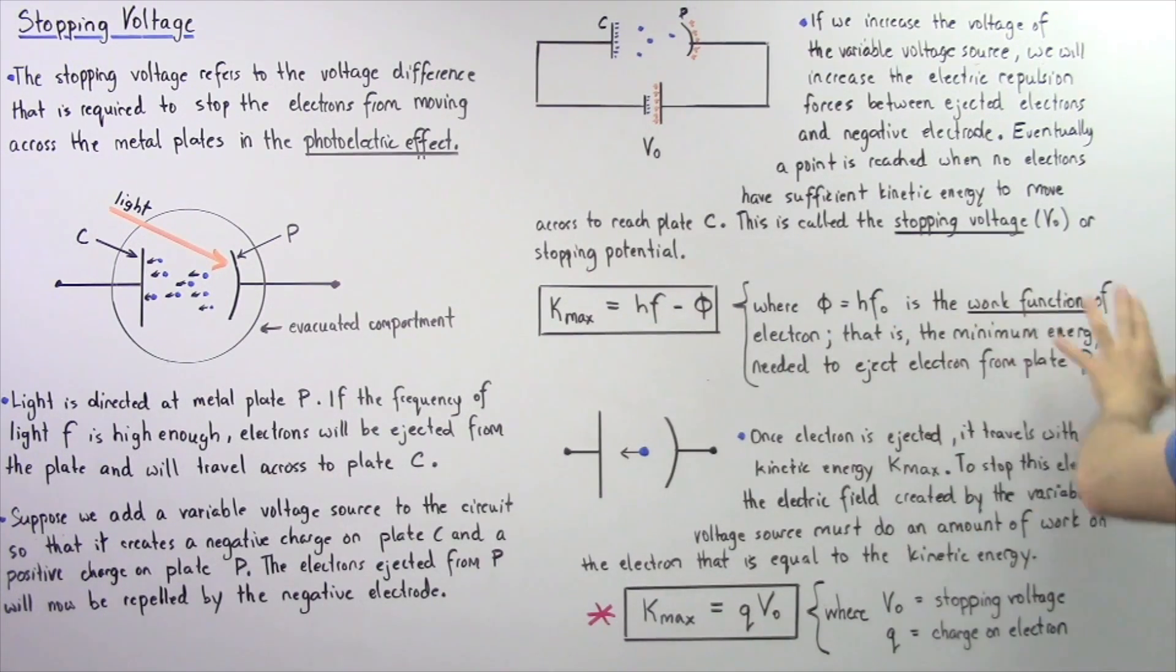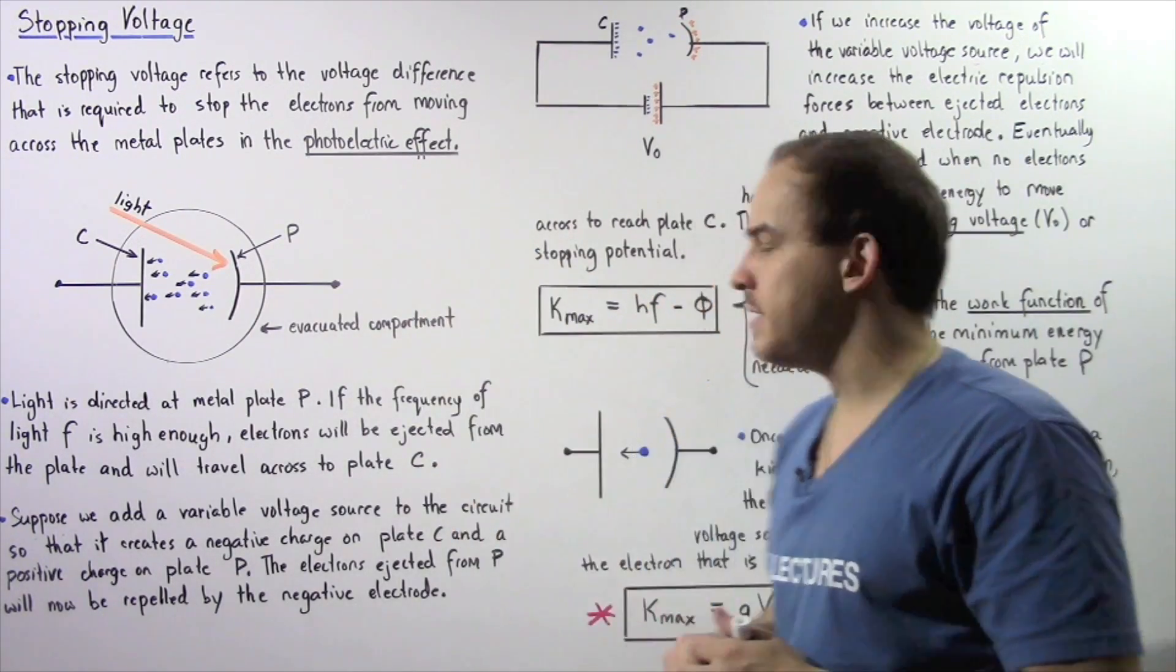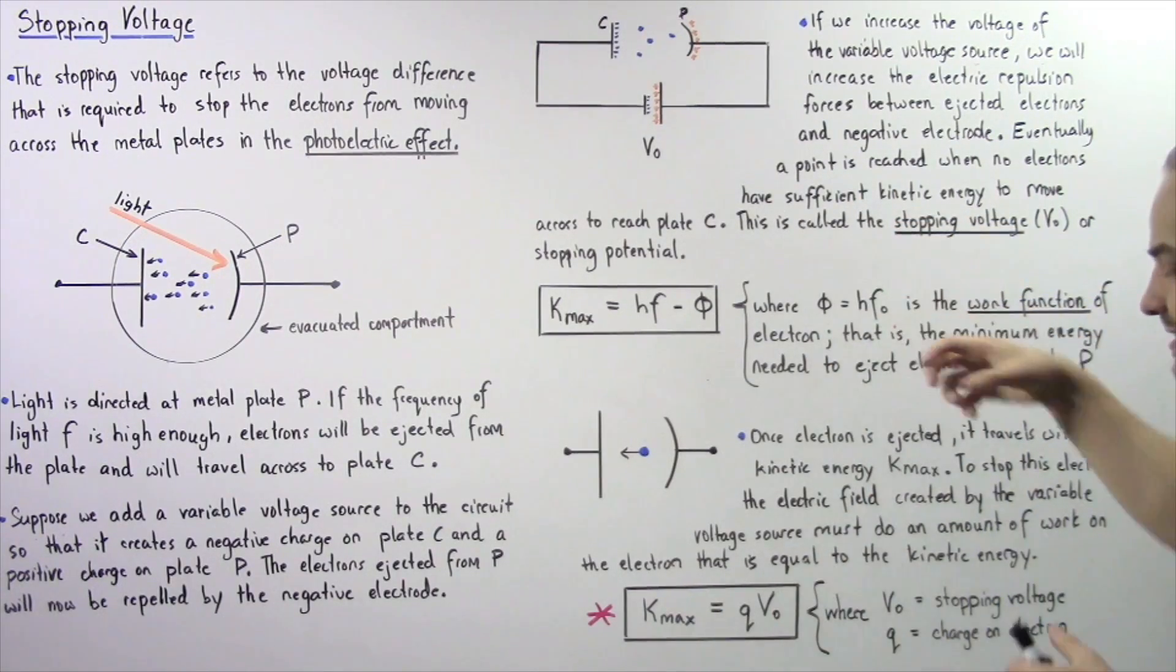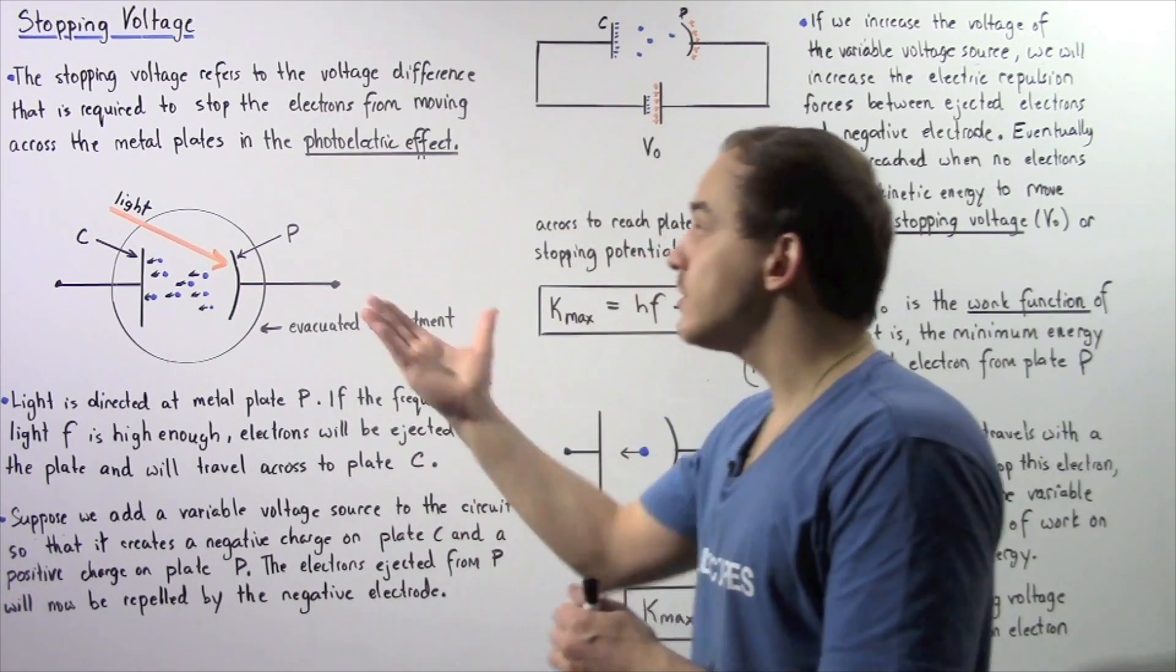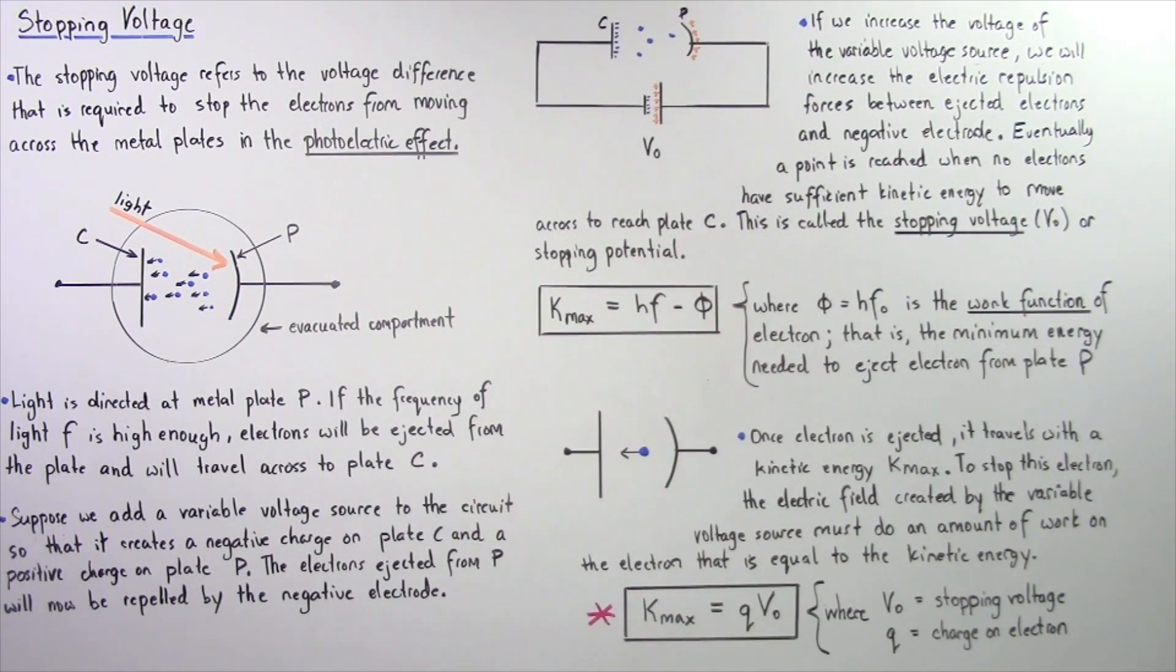So, phi, which is the work function of the electron, that is, it's the minimum quantity of energy that is needed to eject that electron from the surface of plate P. So, F0 is simply the minimum frequency that is required to eject that electron.